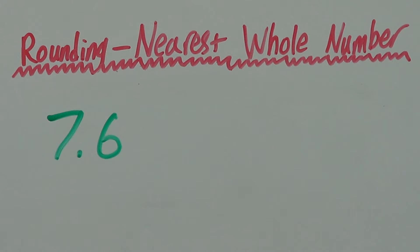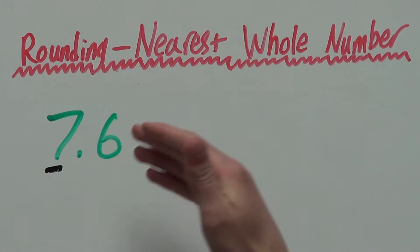When rounding to the nearest whole number, we're rounding to the number right in front of the decimal, as that is the whole number. Basically, when we're rounding, we're looking if this number, we're rounding to this number because that's the whole number.